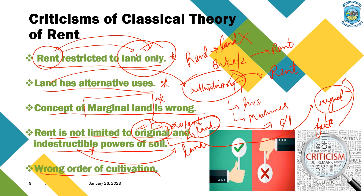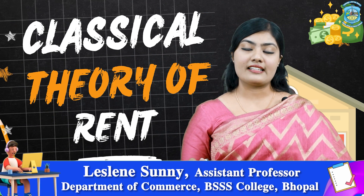The fifth criticism is the wrong order of cultivation. Mr. Ricardo said the most fertile land would be cultivated first, followed by less fertile land. However, it is very difficult to determine which land is most fertile. It can occur that in a rural area, very fertile land exists but is difficult to find. So saying there is a fixed order of cultivation is somewhat wrong. These were the criticisms of the Classical Theory of Rent.